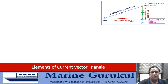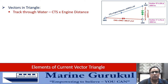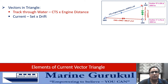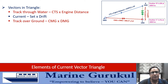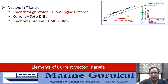Let us appreciate the elements of the vector triangle. The three vectors are: track through water — represented by CTS and engine distance (vector AB); the current vector — represented by set and drift (vector BC); and the track over the ground — represented by CMG and DMG (vector AC). CTS is shown with one arrow, current with three arrows, and course made good with two arrows.